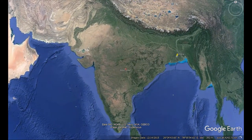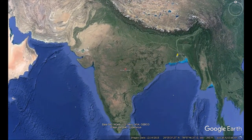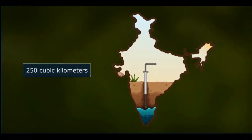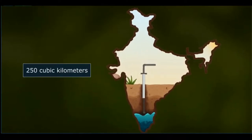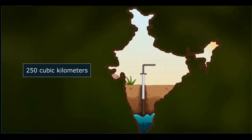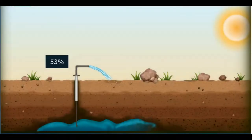India is the world's largest user of groundwater. A whopping 250 cubic kilometers of groundwater are withdrawn every year — that's twice the amount withdrawn every year in China, where agricultural water productivity is twice that of India. 53% of India's irrigated agriculture uses groundwater.